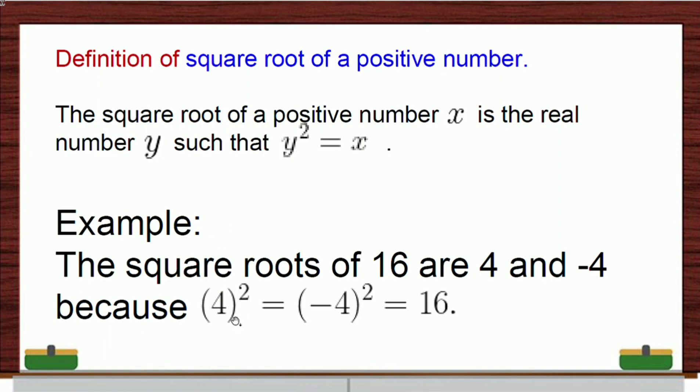So, 4 multiplied by itself, 4, or 4 squared, 4 squared is equal to 16. In the same manner, negative 4, when you multiply it by itself, negative 4 times negative 4, that's also 16. That's why the square roots of 16 are 4 and negative 4.